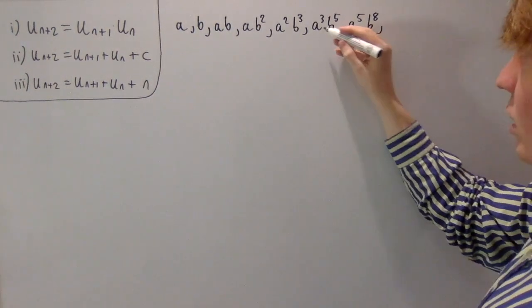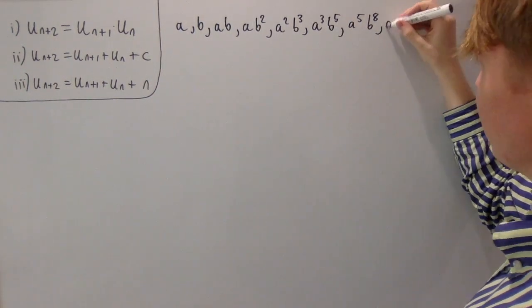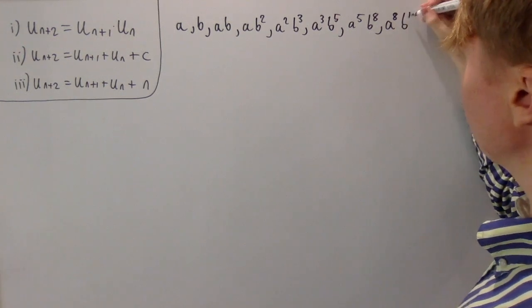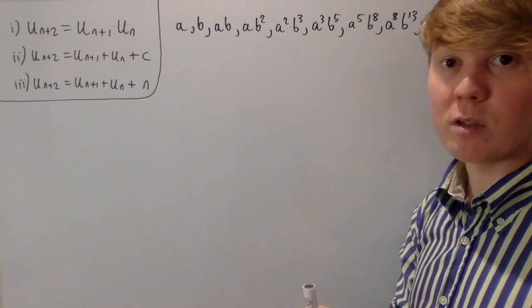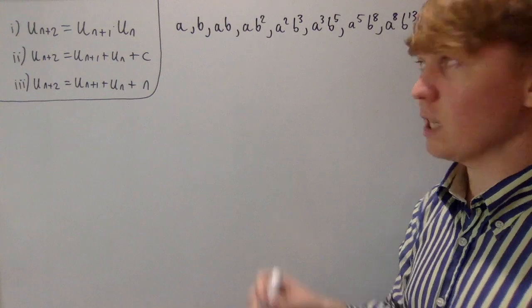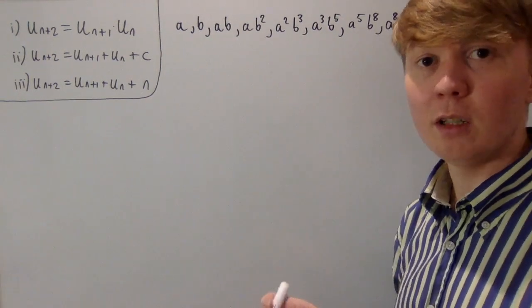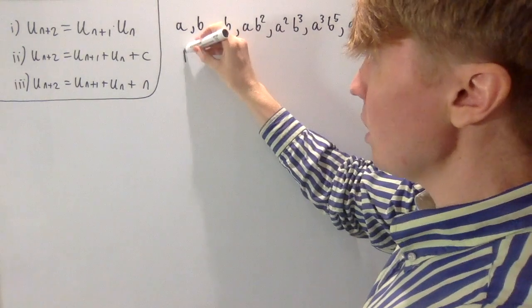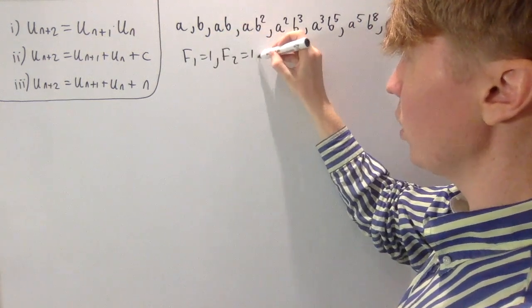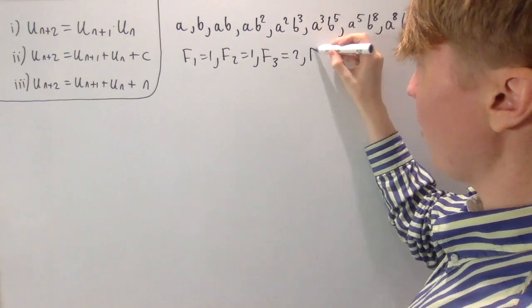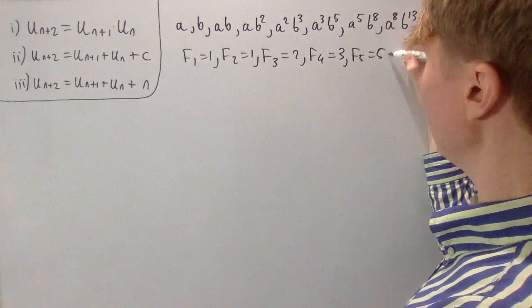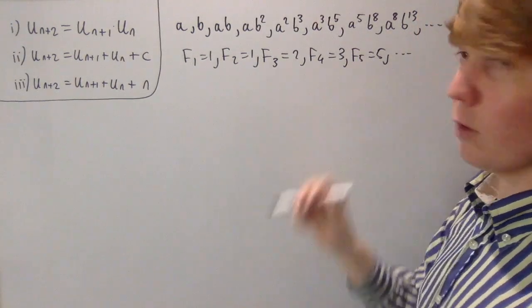You might see a nice pattern emerging here: a to the 3 times a to the 5 gives you a to the 8, and you've got a power of 13 for your b, and so on. The powers of a and b are actually just your Fibonacci numbers, so there's quite a nice way of expressing this sequence in terms of the Fibonacci sequence. So f1 equals 1, f2 equals 1, f3 equals 2, f4 equals 3, f5 equals 5, and so on — these are our Fibonacci numbers.